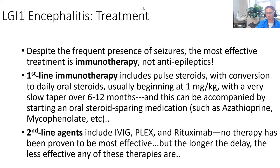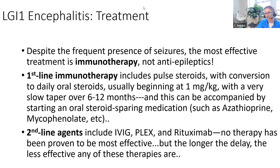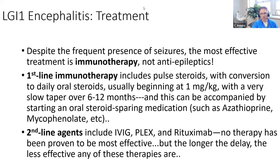If you don't treat properly, patients can do very poorly. The goal is to treat with immunotherapy. You can give antiepileptics, but the best way to stop seizures in this condition is to treat the underlying condition. We're talking about pulse steroids, possibly oral steroids with a steroid-sparing agent, though people have been getting more aggressive with IVIG and rituximab. In the UK they use a lot of PLEX. The longer you wait before effective therapy, the worse patients do - many have permanent memory loss and permanent behavioral changes.